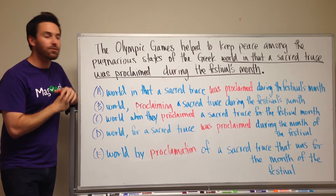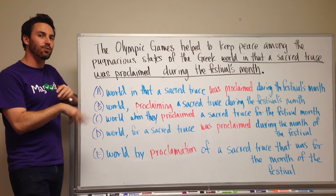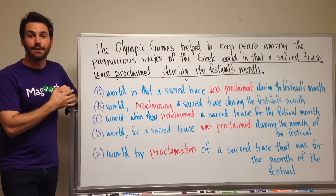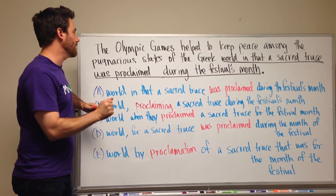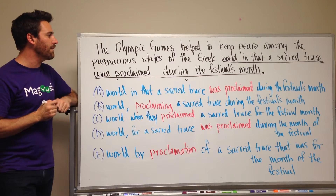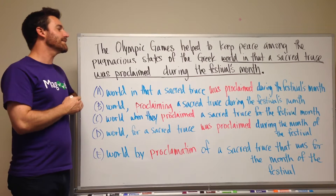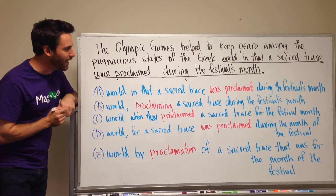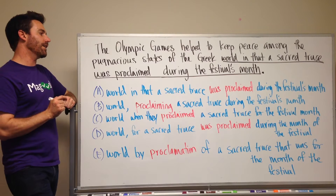This question came from the official GMAT book, the 12th edition — it's number 59 if you want to go search it out. But we'll read it here: 'The Olympic Games helped to keep peace among the pugnacious states of the Greek world in that a sacred truce was proclaimed during the festival's month.'